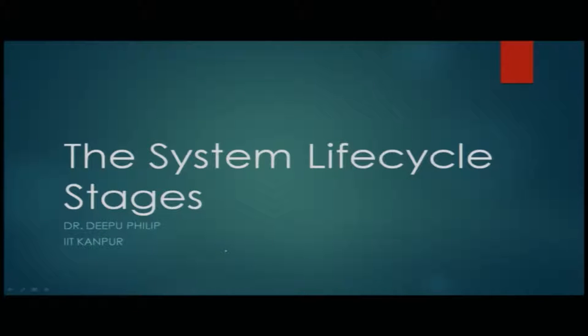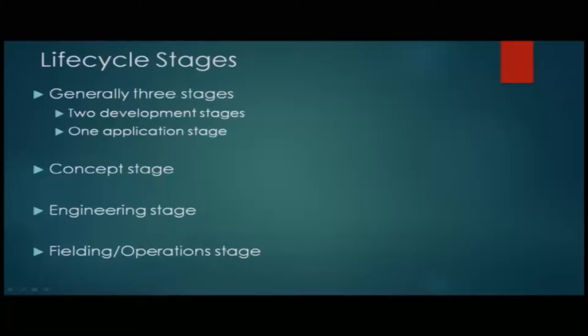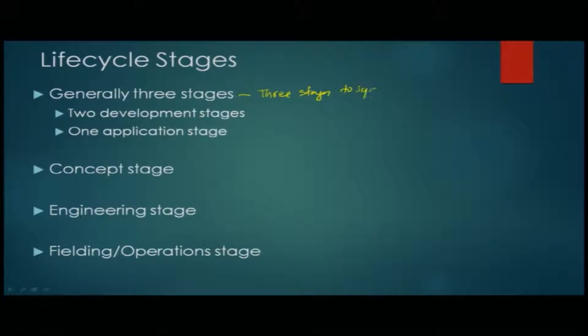We have already seen previous material about the life cycle and different types of life cycle models available. We saw that almost all basic models have basic stages and phases within those stages, though they are called by different names and nomenclature. We will see how the basic structure applies to different models. The life cycle generally has three stages in the system life cycle.